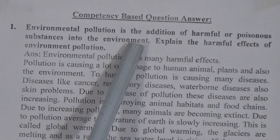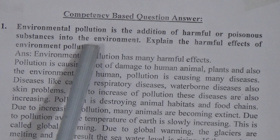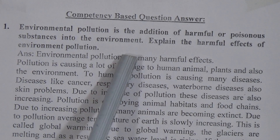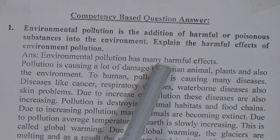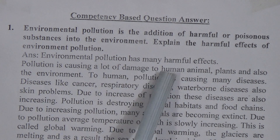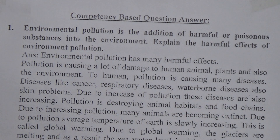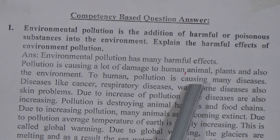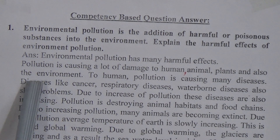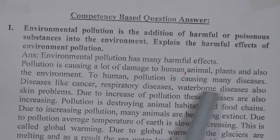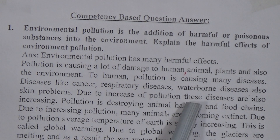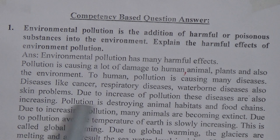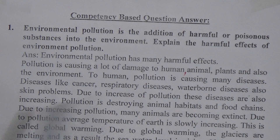Now we will go to the competency-based question answer. The first CBQ is: environmental pollution is the addition of harmful or poisonous substances into the environment — explain the harmful effects of environmental pollution. The answer is: environmental pollution has many harmful effects. Pollution is causing a lot of damage to humans, animals, plants, and the environment. Due to pollution, humans are suffering from diseases like cancer, respiratory diseases, waterborne diseases, and skin problems. As pollution increases, these diseases are also increasing. Pollution is destroying animal habitats and food chains, and due to increasing pollution, many animals are becoming extinct.